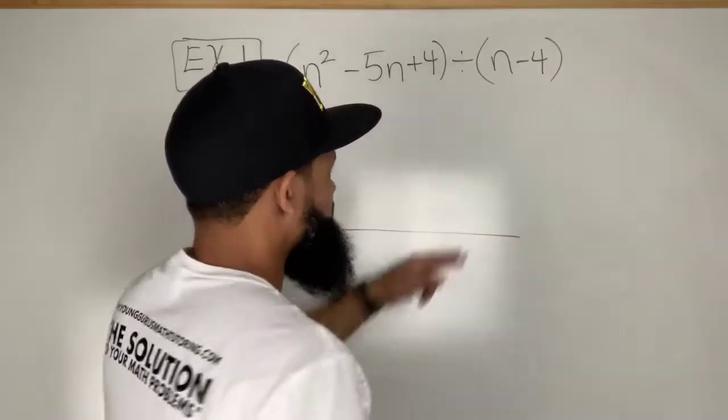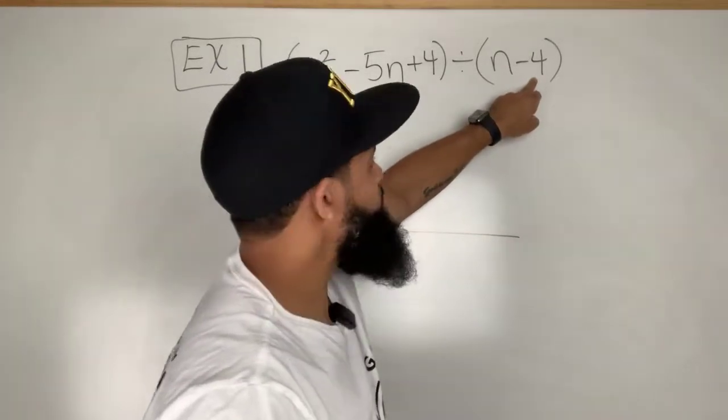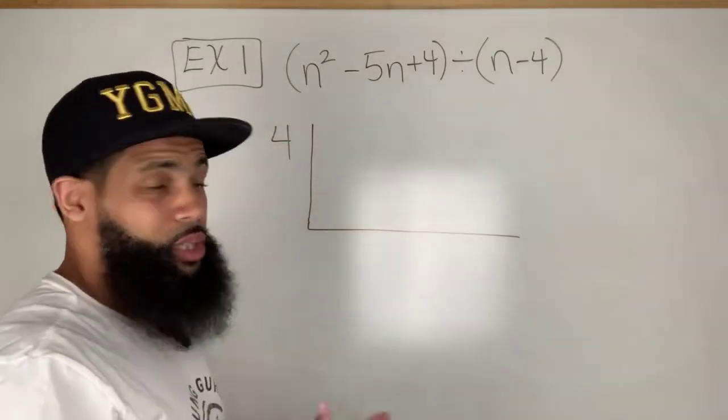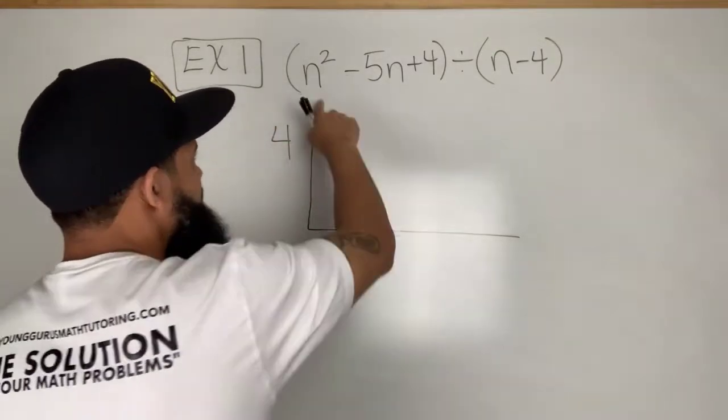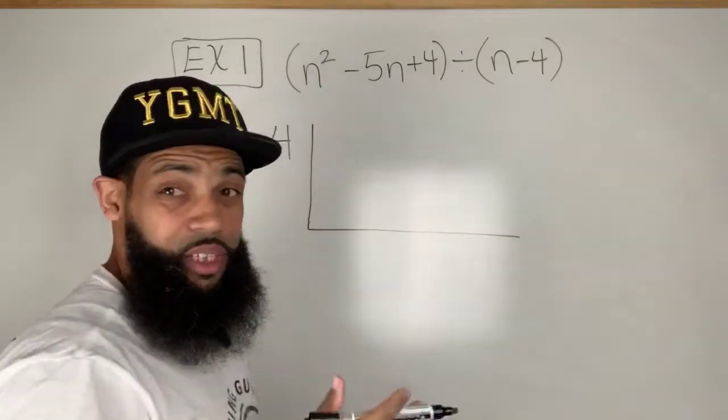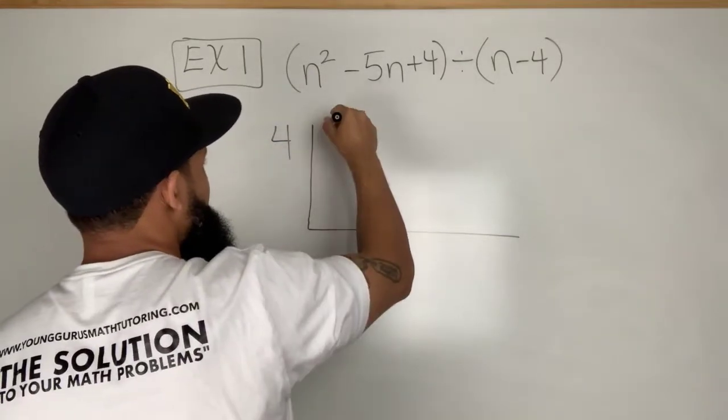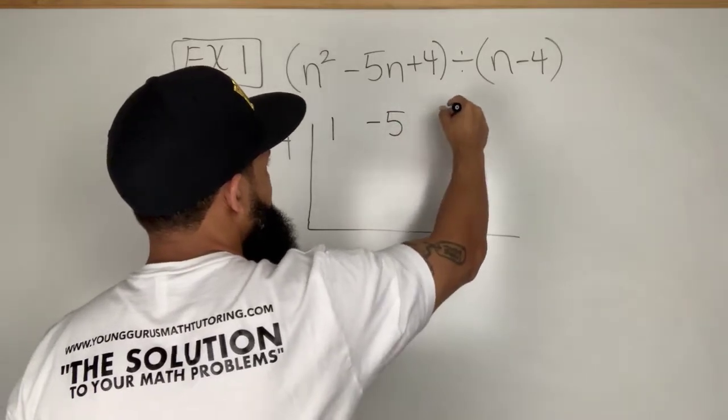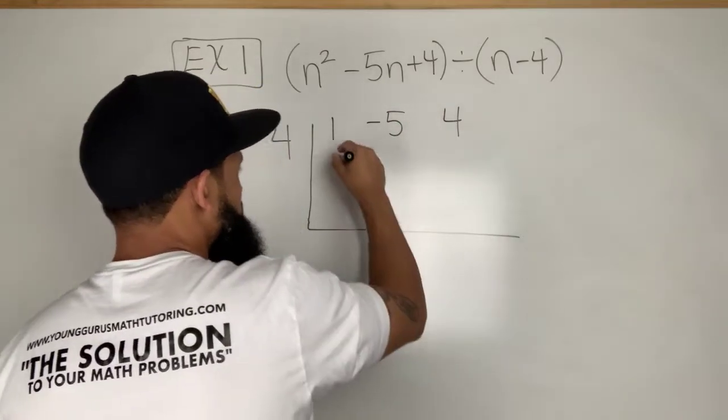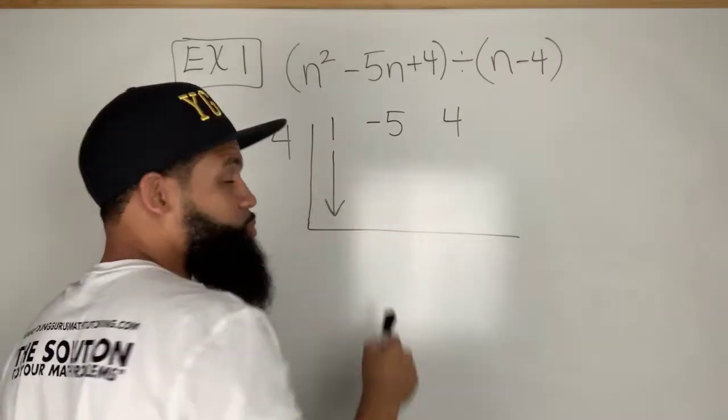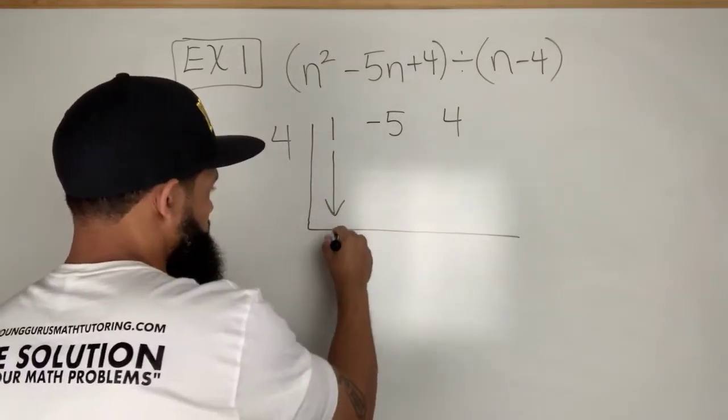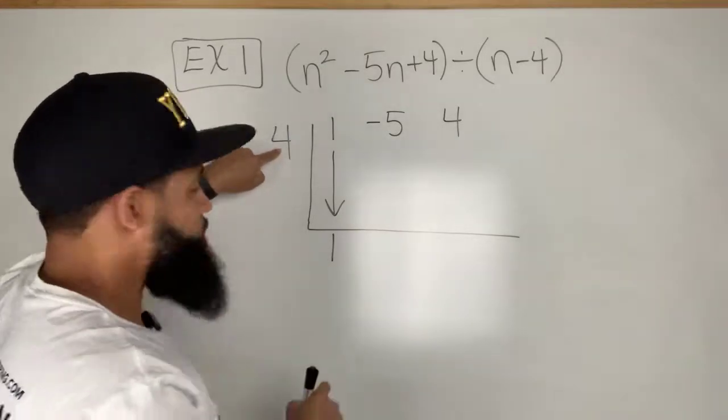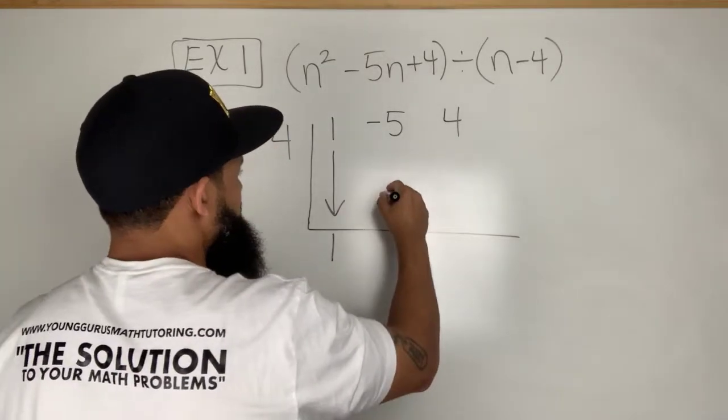So what I'm going to do is I'm going to actually draw a table that looks like this. I'm going to take this term right here, four, and put it there. I'm going to take the coefficient of each term, so I'm going to start from the highest one. The coefficient of n squared is one, coefficient of n is negative five, and then the constant is four.